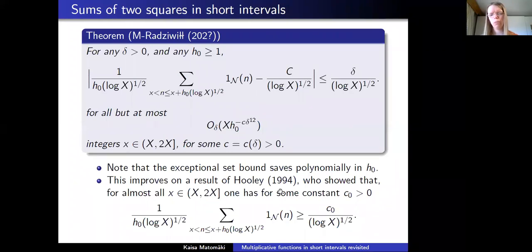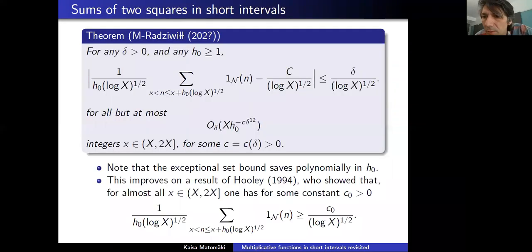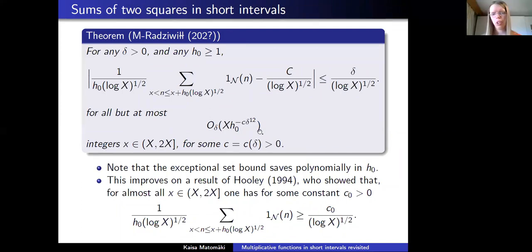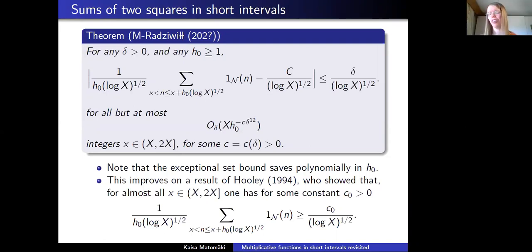This improves on the result of Hooley, who showed that for almost all x one has a lower bound of the right order of magnitude, but without an asymptotic formula. We improve by getting an asymptotic formula for almost all x rather than just the order of magnitude. A clarification from the Q&A: the constant c in the exceptional set is an absolute constant — not a function of delta — with delta^12 having an absolute constant exponent, approximately like 2000^(-12).